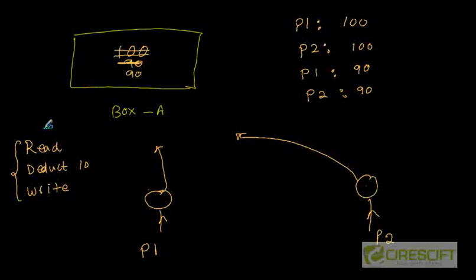If you see, there are two deductions happening - one deduction by P1, another deduction by P2. But actually, it looks like only one deduction is done and the second deduction is just overwritten. Whoever is going to write first, his update is gone because eventually the other person is going to come and overwrite that one.